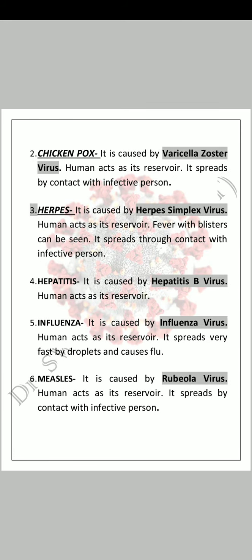Next comes chickenpox. It is caused by varicella-zoster virus. Human acts as its reservoir. It is spread by contact with an infective person. Infected person کو پورے چہرے اور شرییر پر چھوٹے چھوٹے دانے نکل آتے ہیں۔ Human ہی اس کا host cell ہوتا ہے اور infected human being کے contact میں آنے سے دوسرے کو chickenpox ہونے کے chances بڑھ جاتے ہیں۔ Next is herpes. It is caused by herpes simplex virus. Human acts as its reservoir. Fever with blisters can be seen. It spreads through contact with an infective person.